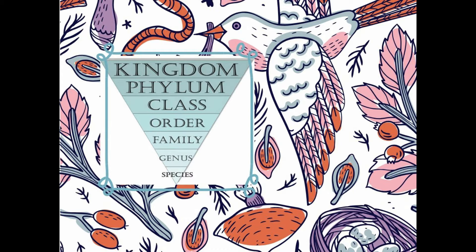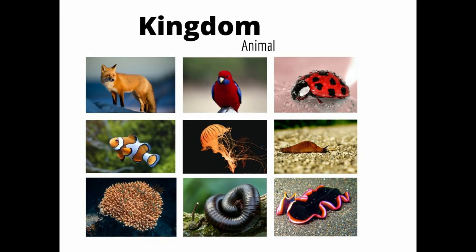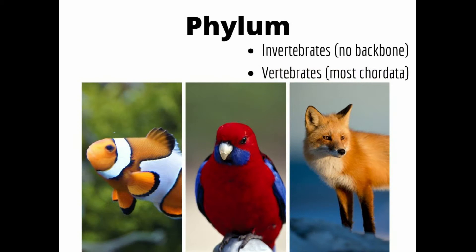There are actually five kingdoms in this classification: Protista, fungi, plant, animal, and the newer discovery of archaic bacteria. We're going to start with one kingdom — the animal kingdom. Everything pictured here is an animal, from the fox to the flatworm. The next grouping is called a phylum, and they can basically be broken down into two groups: invertebrates and vertebrates. Invertebrates do not have a backbone; vertebrates do.